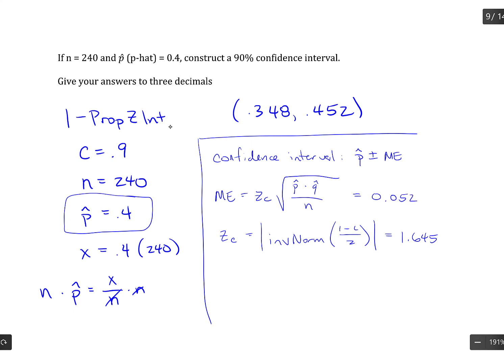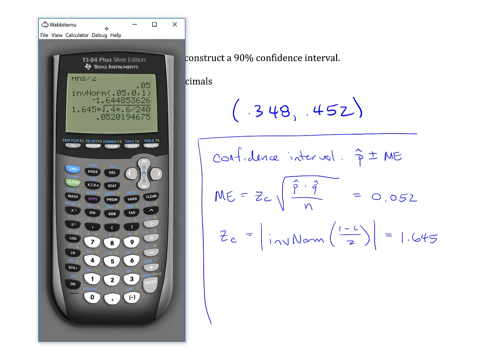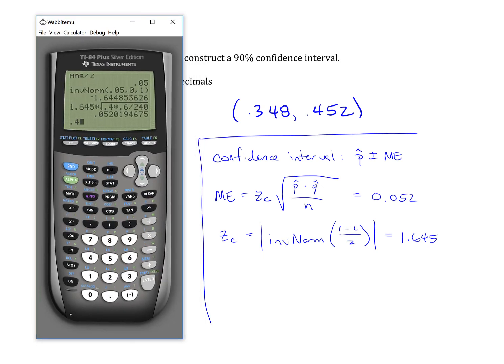So my margin of error is 0.052. So if I take my point estimate of 0.4 minus 0.052, and then I take that point estimate of 0.4 plus 0.052, I get 0.348 and 0.452, exactly the same values that I came up with in the calculator originally. Either way, this is your final answer for the confidence interval.